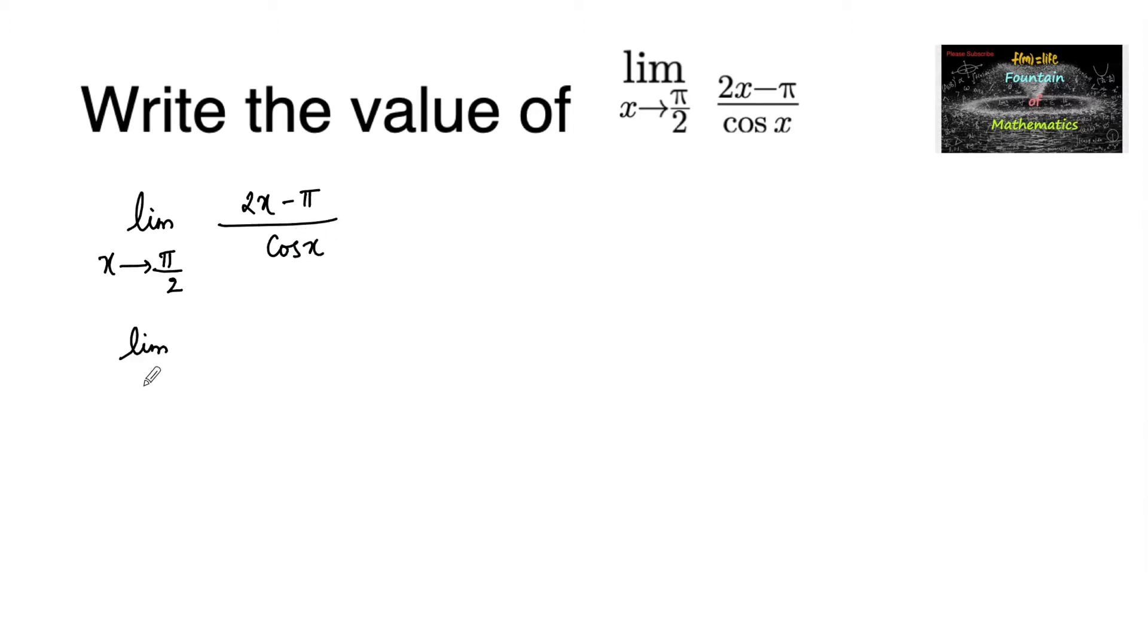So we can write this as limit x tends to pi by 2. By taking minus 2 common, I can write this as numerator pi by 2 minus x upon cos x. We can also write it as sin pi by 2 minus x.